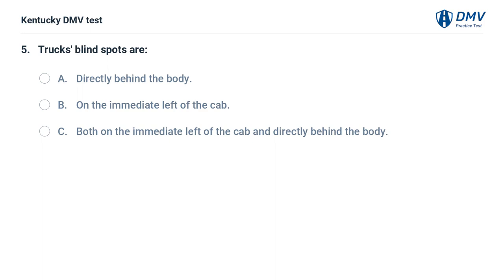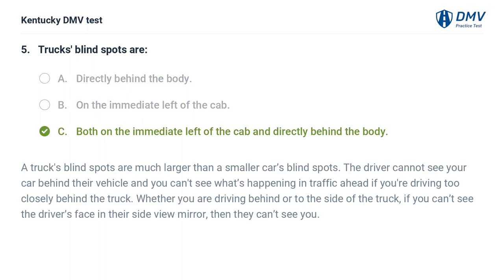A truck's blind spots are: A. Directly behind the body. B. On the immediate left of the cab. C. Both on the immediate left of the cab and directly behind the body. The correct answer is A. A truck's blind spots are much larger than a smaller car's blind spots. The driver cannot see your car behind their vehicle, and you can't see what's happening in traffic ahead if you're driving too closely behind the truck. Whether you are driving behind or to the side of the truck, if you can't see the driver's face in their side view mirror, then they can't see you.